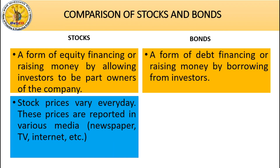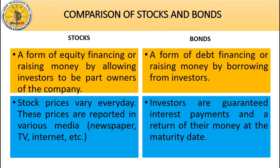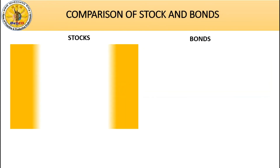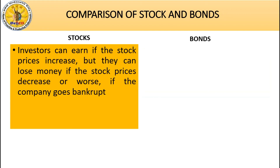Stock prices vary every day, and these prices are reported in various media such as newspapers, TV, and the internet. This makes stocks somewhat risky because prices change daily — they can go up or they can go down. In bonds, investors are guaranteed interest payments and a return of their money at the maturity date. Investors can earn if the stock price increases, but they can lose money if prices decrease or if the company goes bankrupt.